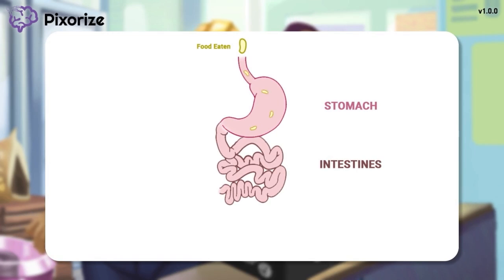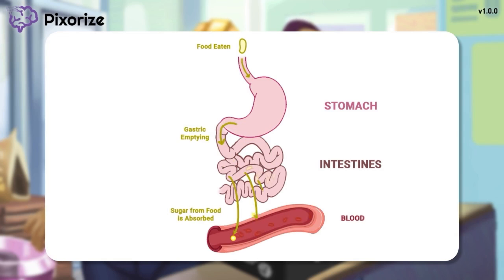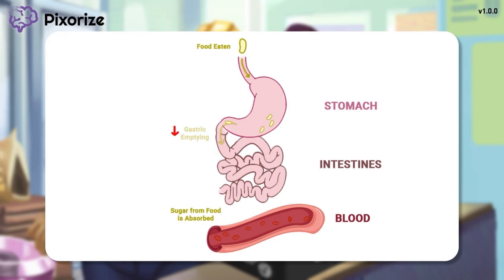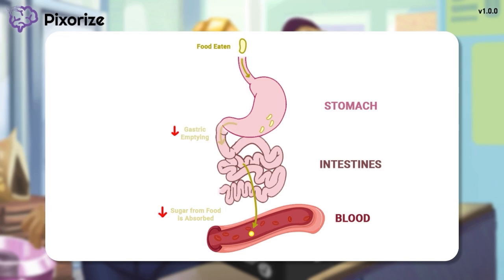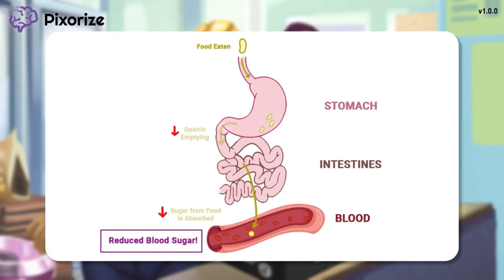Food that we eat is normally emptied from the stomach into the intestines through a process called gastric emptying. Once inside the intestines, the sugars inside food are absorbed into the blood. By decreasing gastric emptying, DPP-4 inhibitors reduce the amount of food that moves at a time into the intestines, reducing the amount of sugar absorbed into the bloodstream. The end result is a decrease in the spike of blood sugar that occurs after meals, helping to treat diabetes.